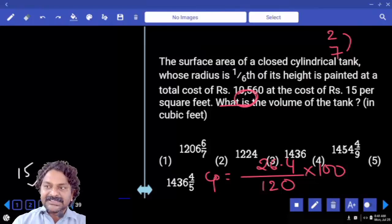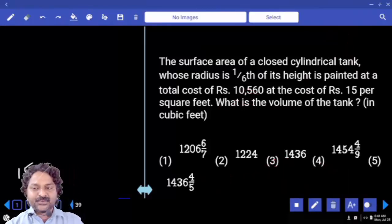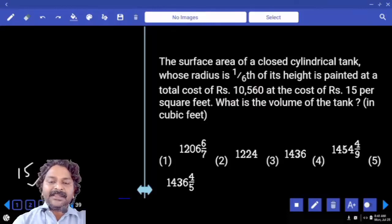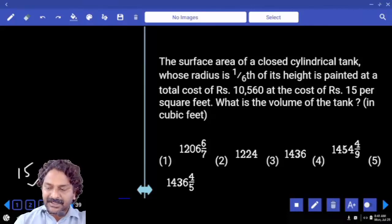The surface area of a closed cylindrical tank whose radius is one-sixth of the height is painted at a total cost of 10,560 at the cost of 15 rupees per square feet. What is the volume of the tank?